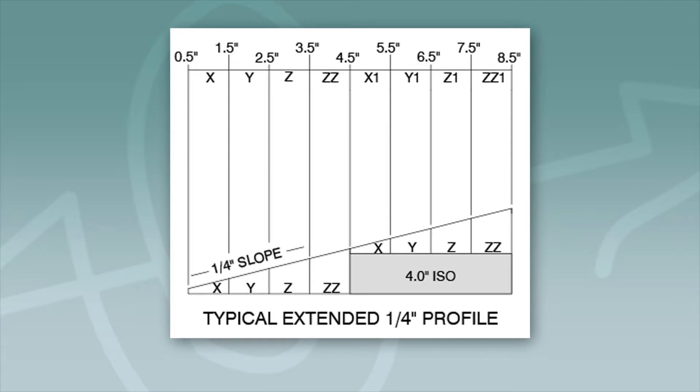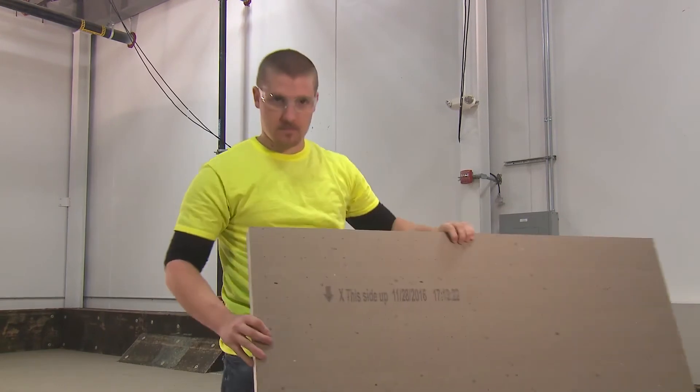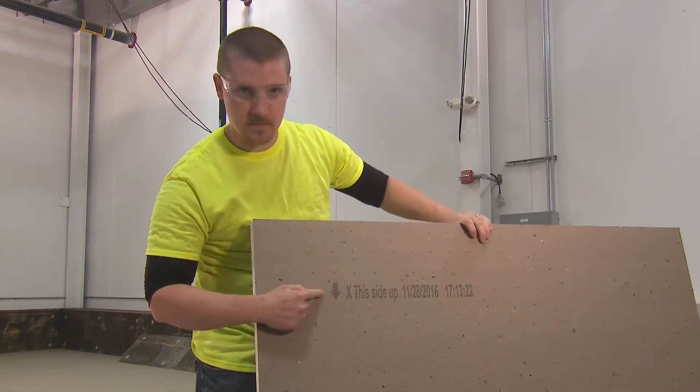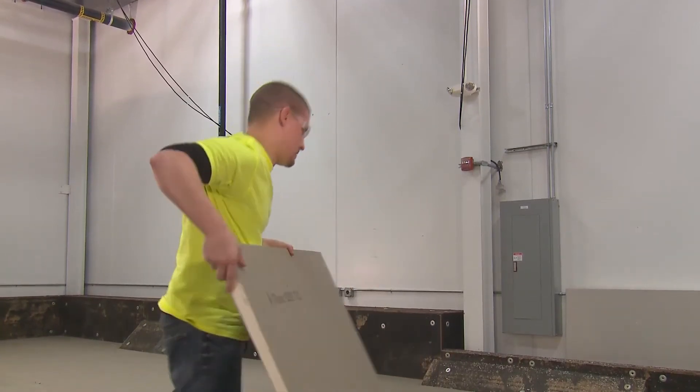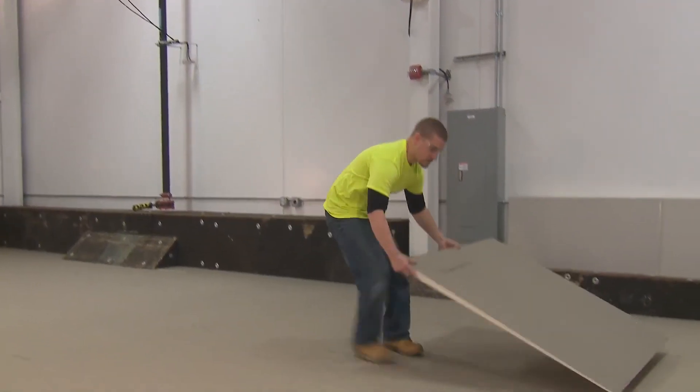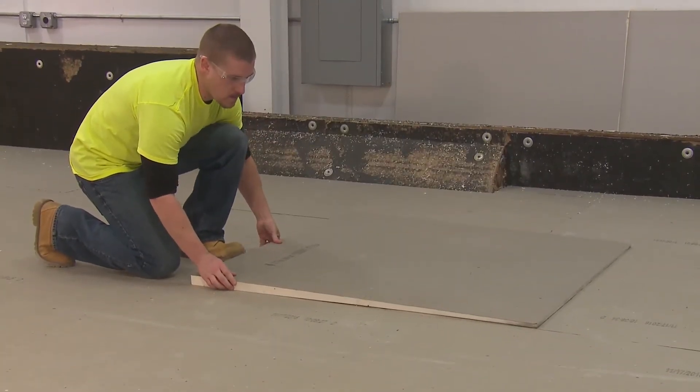For this video, we will be using a typical extended 1/4 inch profile. We start with an X panel. X panels run from 0.5 inches to 1.5 inches in thickness. We lay the low end of the panel toward the drainage point, which can be a scupper, drain, drip edge, or gutter.